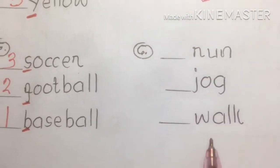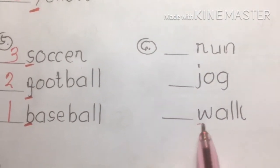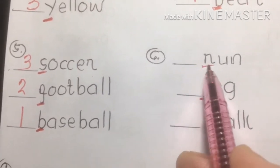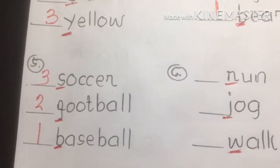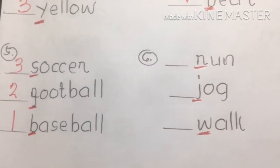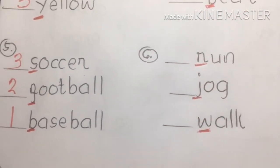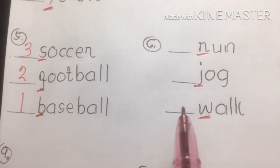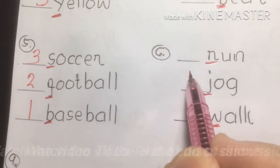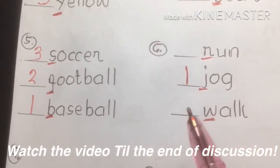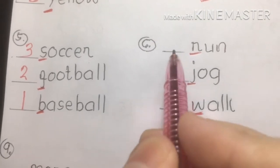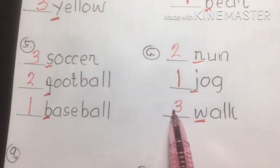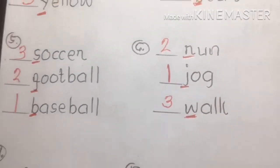Number six: run, jog, walk. Underline the first letter of each word. J comes first in the alphabet among J, R, and W, so jog is first. R is second — run. And walk is third.